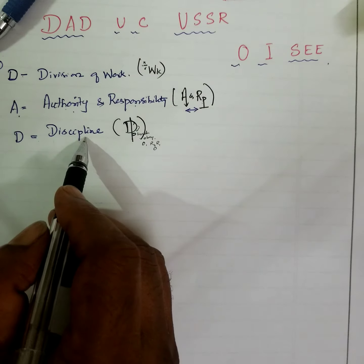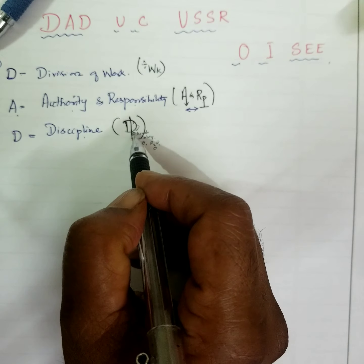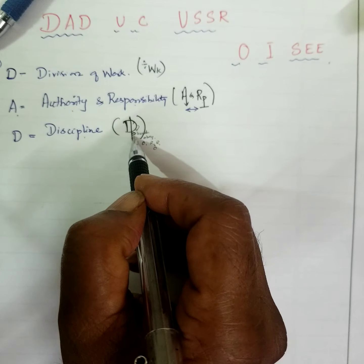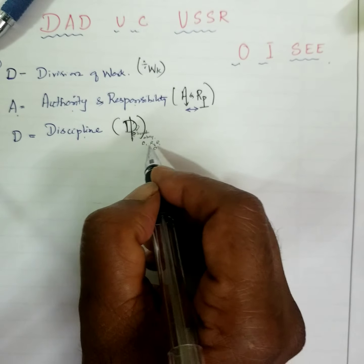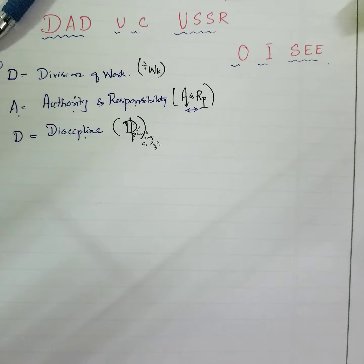D stands for discipline. I write D, P is below. Below means you are obedient. One should be obedient towards rules and regulations of an organization.